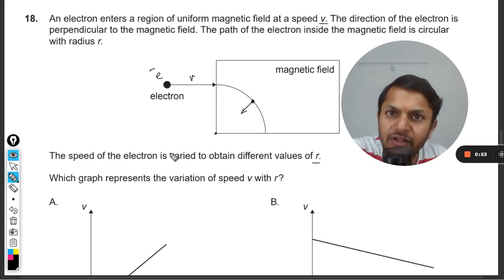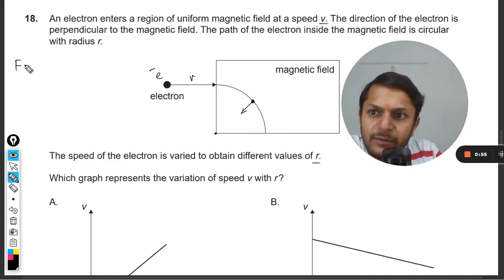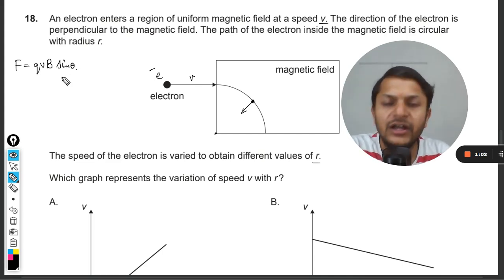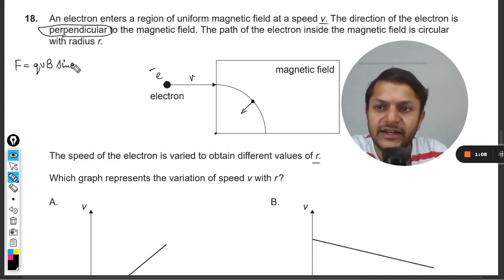The force that will be acting on it will be given by qvB sin θ, where θ is the angle between the velocity vector and the magnetic field vector, which is given as 90 degrees. So sin 90 will be taken as 1, so the force is simply qvB.